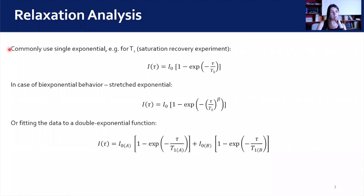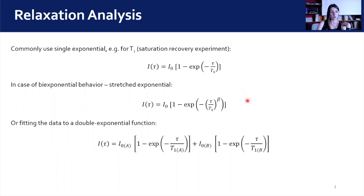When it comes to analyzing relaxation data, we commonly fit a single exponential decay. But there are cases where we might encounter more complex relaxation behavior, where we suspect that the relaxation decay is a composite of multiple relaxing environments. In that case, we can use a stretched exponential. In cases where we know we have, for example, two differently relaxing components, we can fit with an appropriate double exponential function.